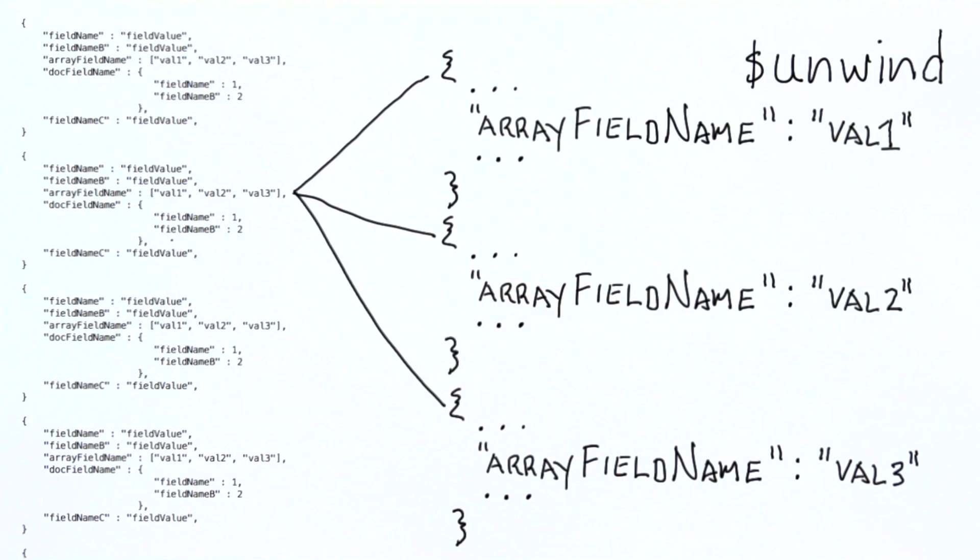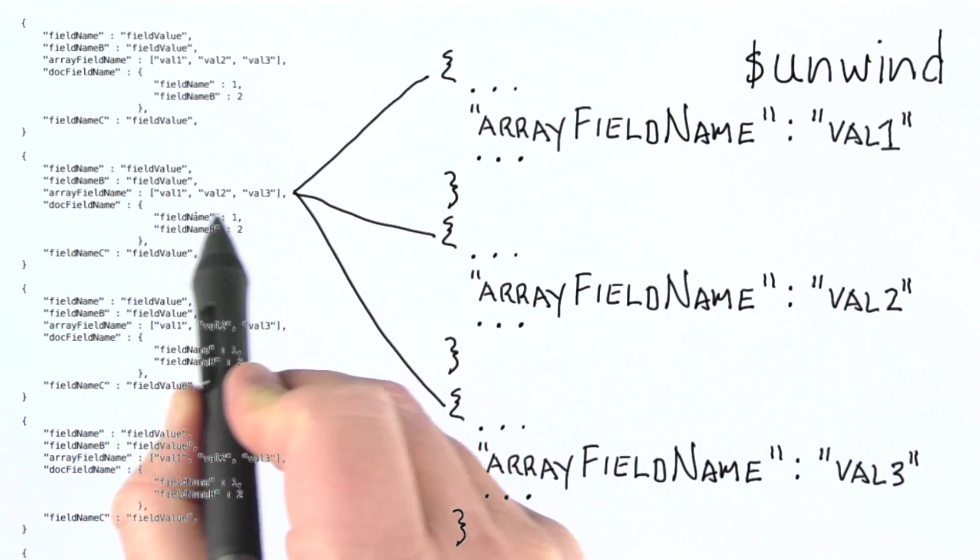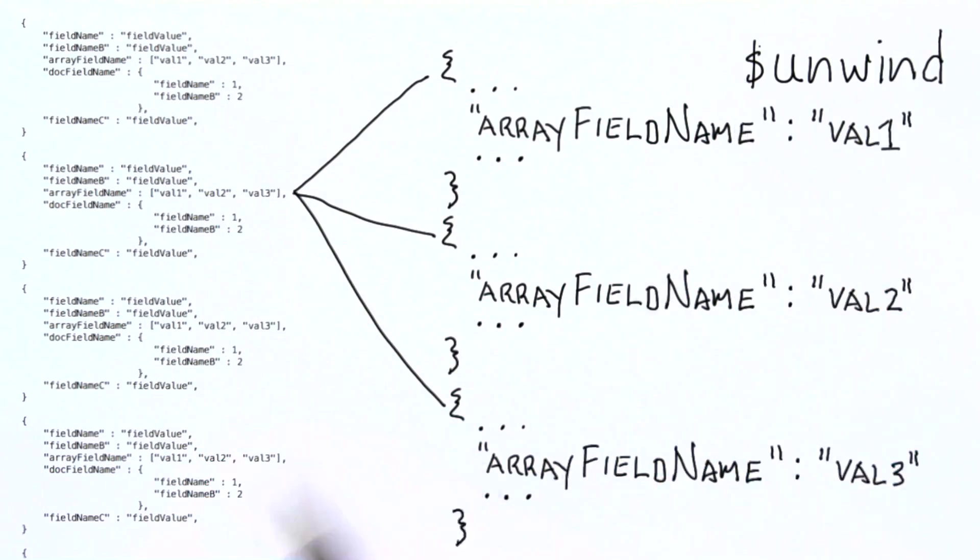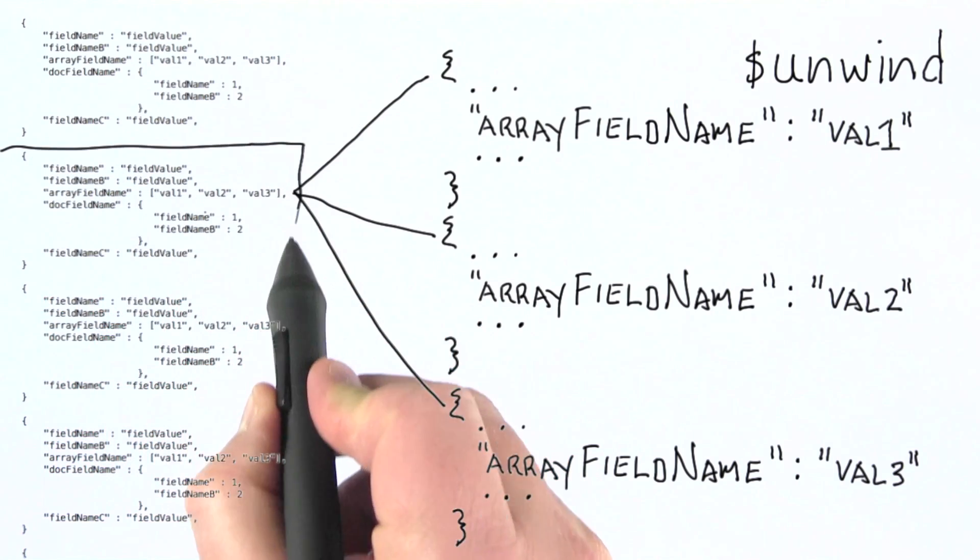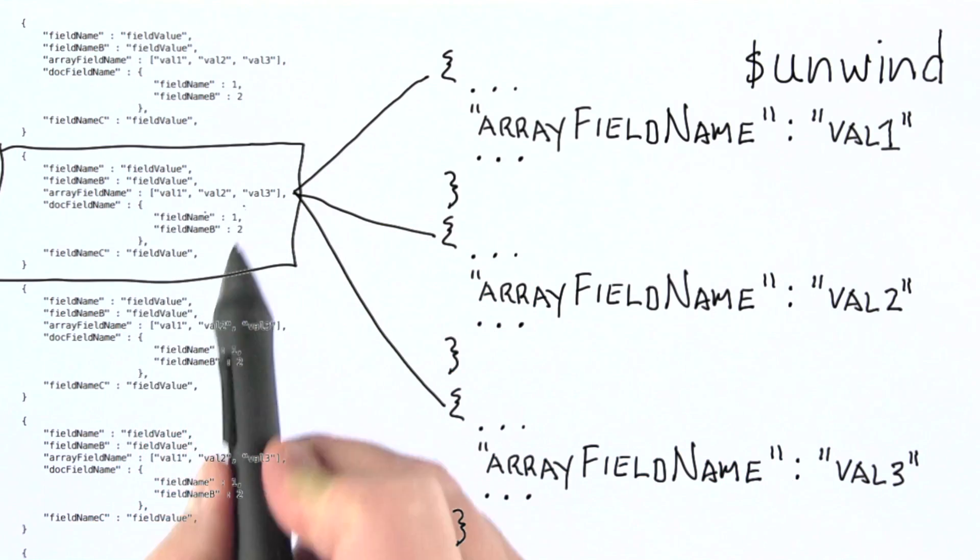What unwind does for us is for every value of an array field on which we're using unwind, it will create an instance of the document containing that array field for every value in the array.